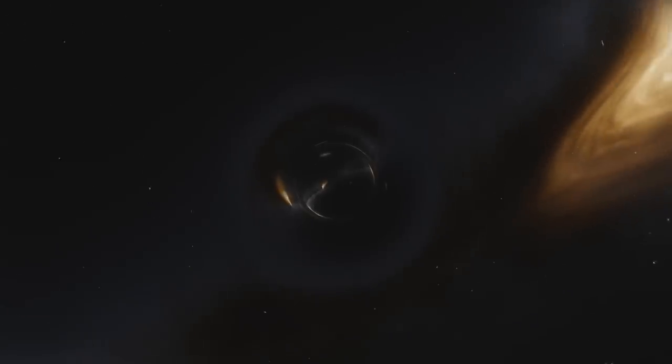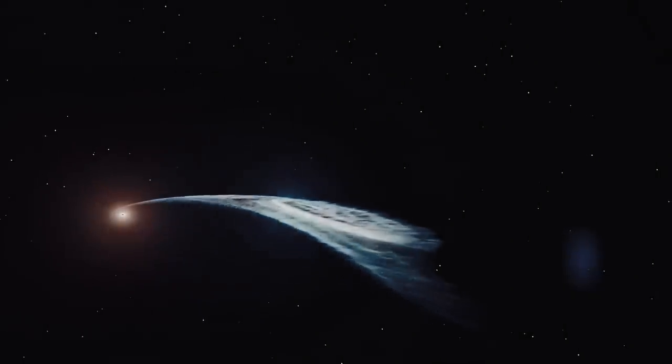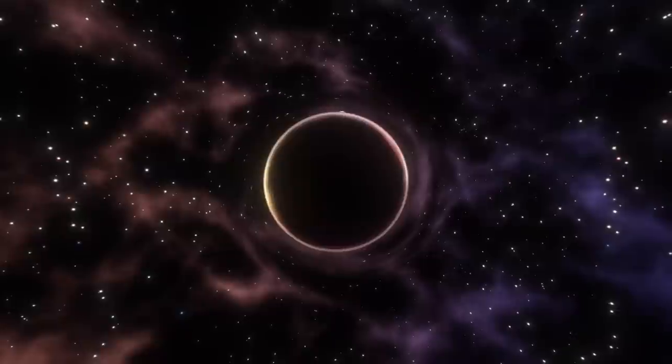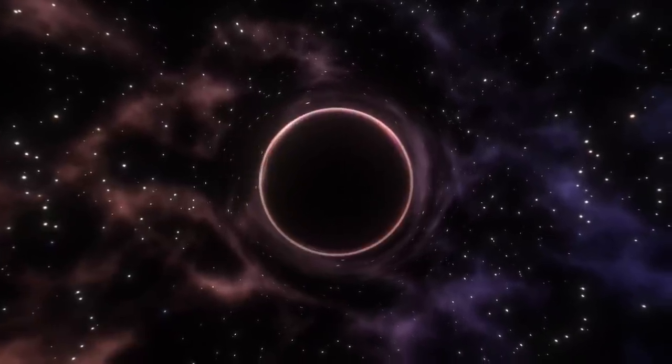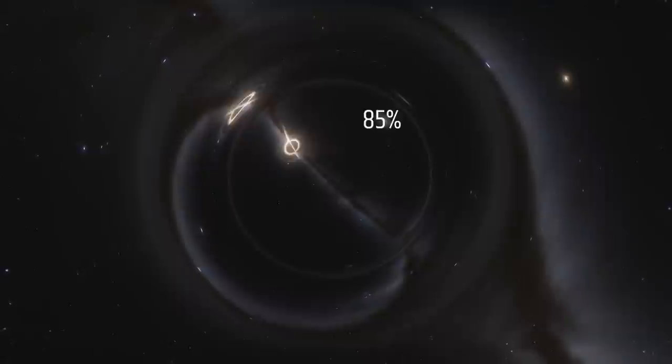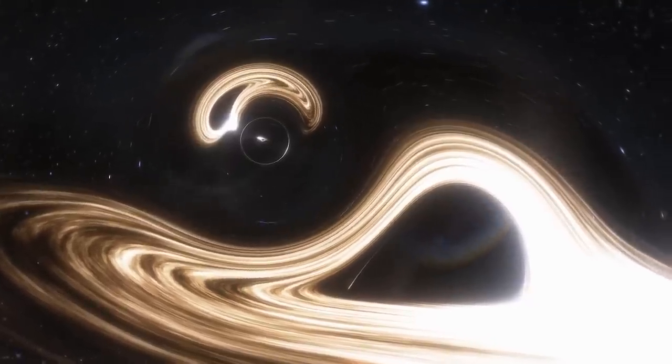The exact nature of the Great Attractor is still not fully understood, but it is thought to be a region of dark matter, a mysterious substance that does not emit, absorb, or reflect light, and is therefore invisible to telescopes. Dark matter is believed to make up about 85% of the matter in the universe, but its properties are still not well understood.